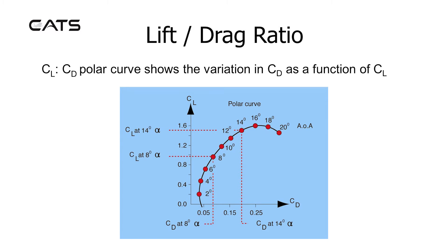Lift to drag ratio. CL and CD can be plotted on a curve known as a polar curve which shows the variation in CD as a function of CL. For every set of values, the angle of attack can also be plotted.